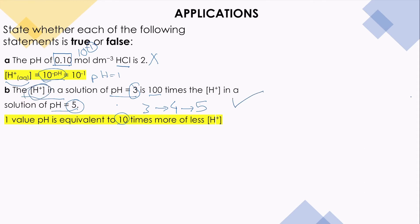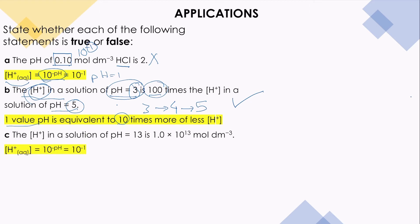The concentration of hydrogen ions in pH 3 is 100 times the concentration of hydrogen ions in pH 5. As we go up with the pH value, the concentration of hydrogen decreases. So one unit of pH is equivalent to 10 times more or less concentration of hydrogen.